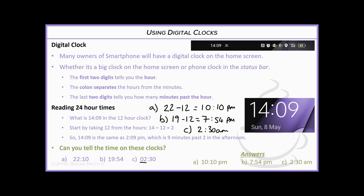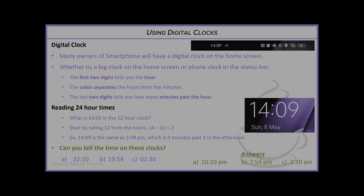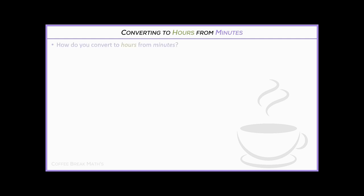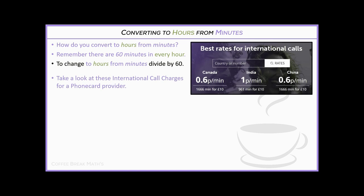Now let's look at converting minutes to hours. In some instances it's important to convert across. Remember there are 60 minutes in every hour — that's key. To change from minutes to hours, we divide by 60.